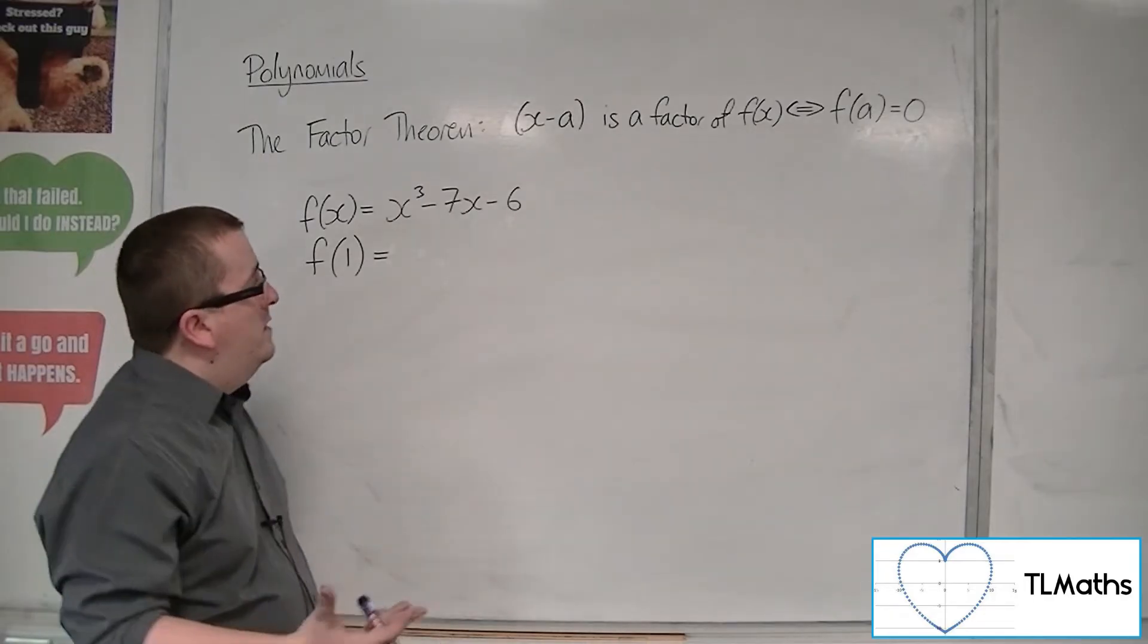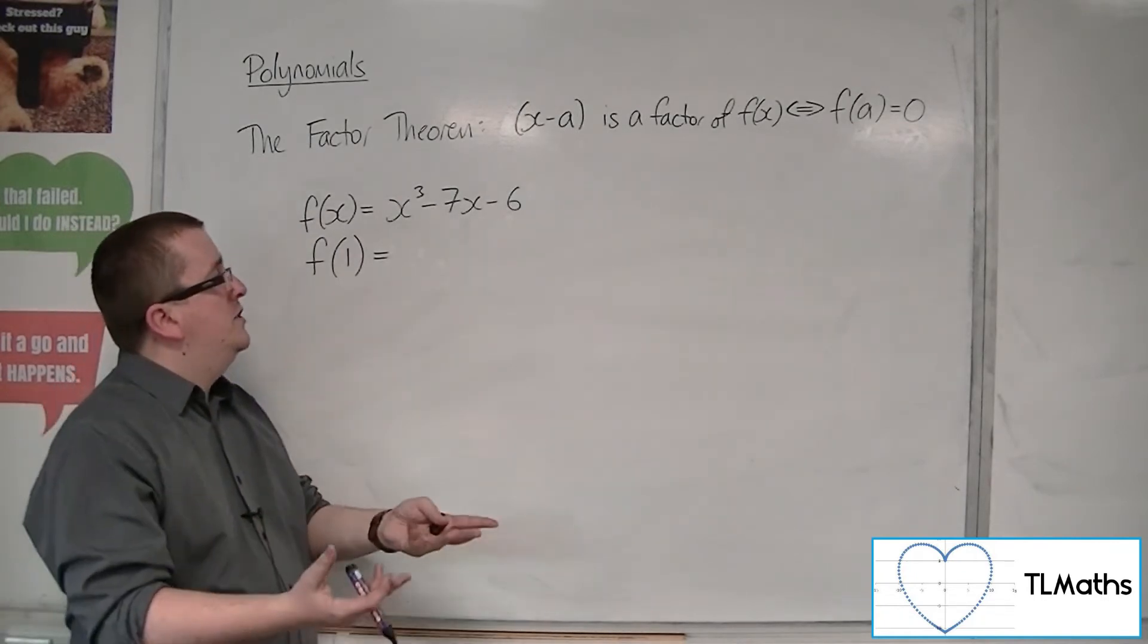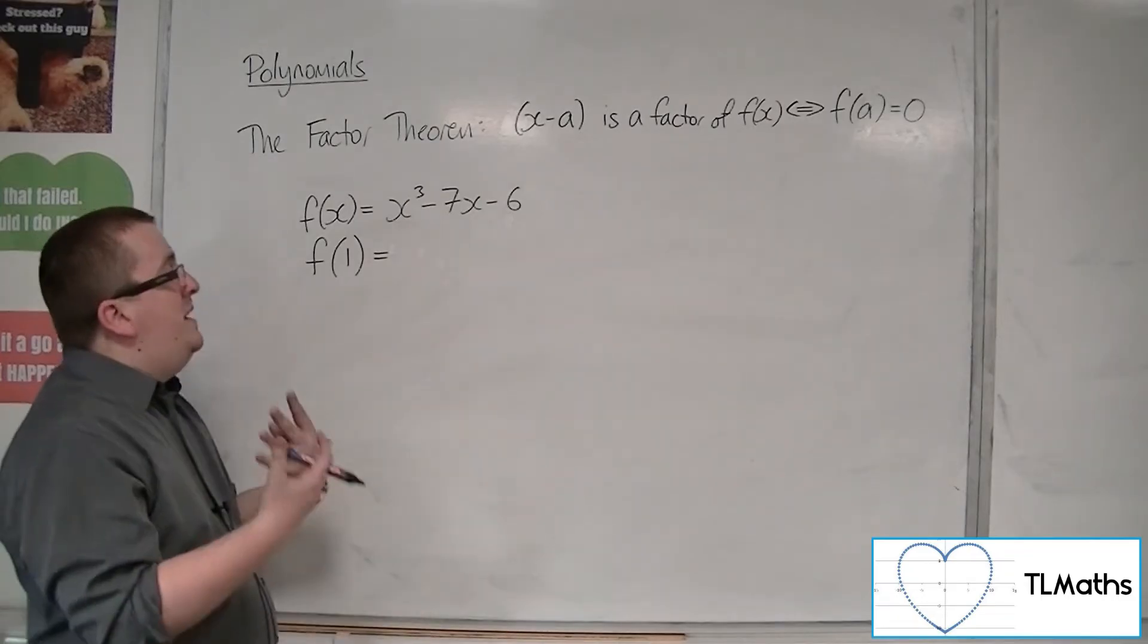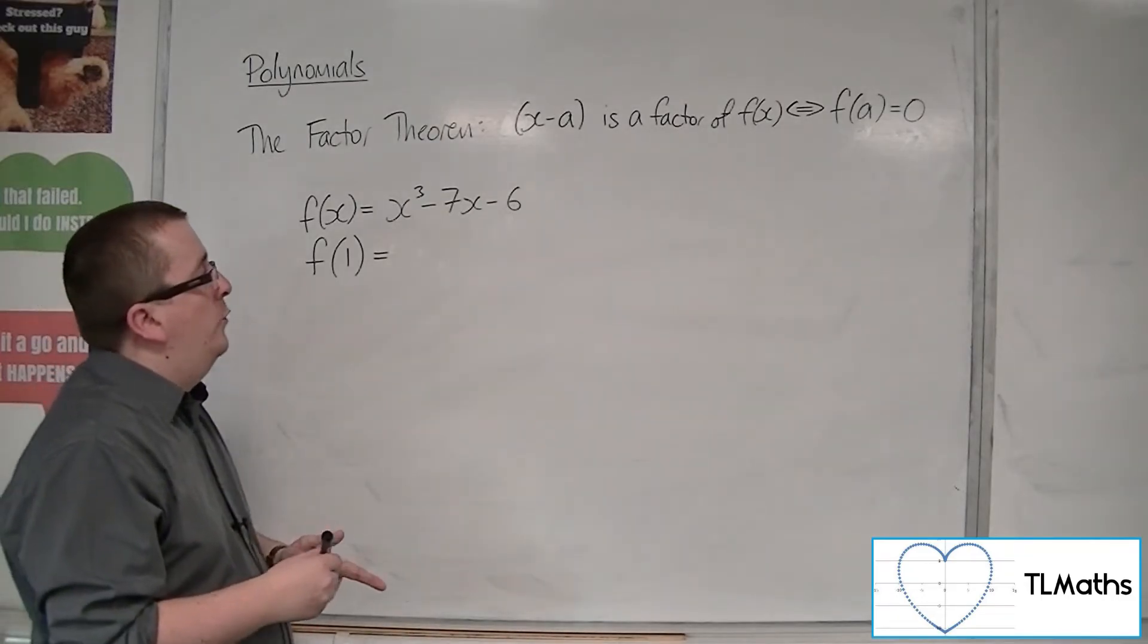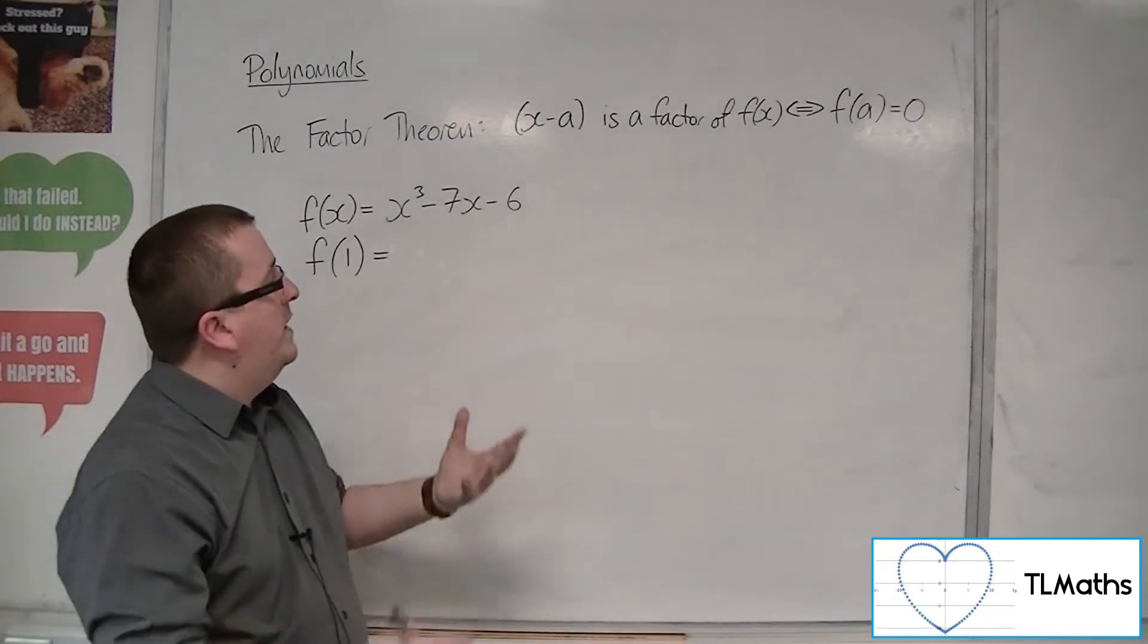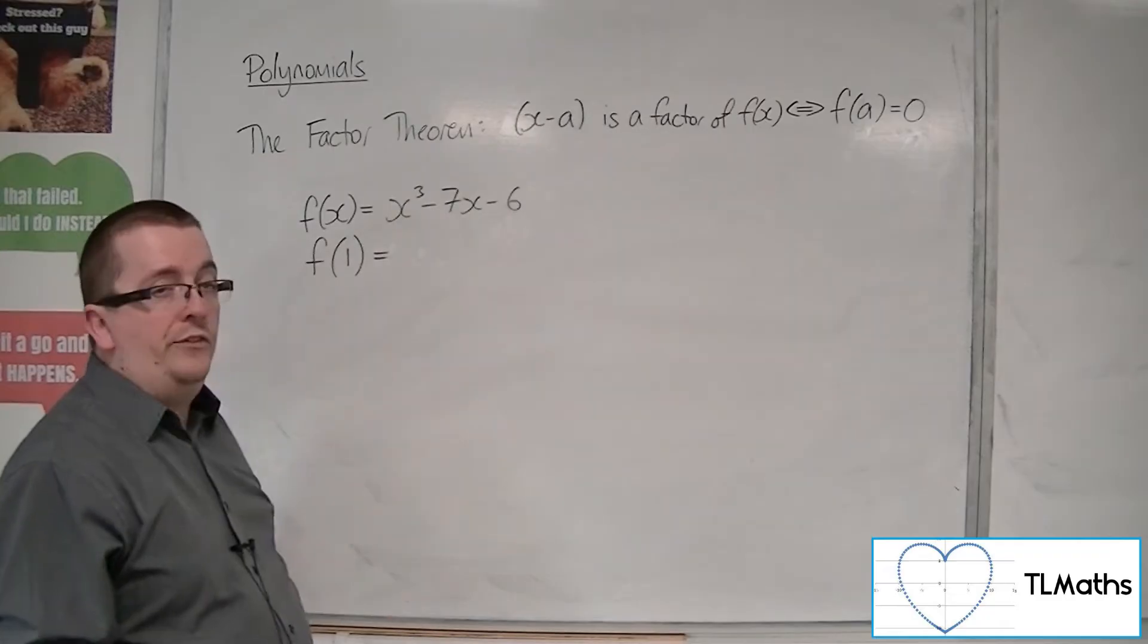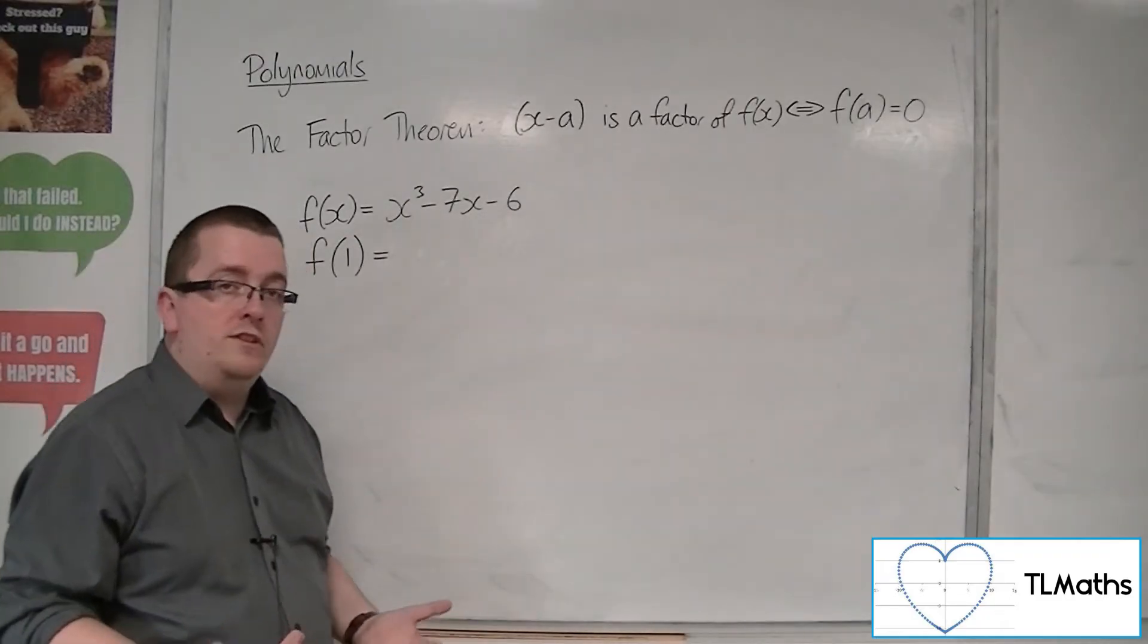So 1, minus 1, 2, minus 2, 3, minus 3, 6 or minus 6. There would be no point in trying 5 or 0 or 100 or whatever, because ultimately those numbers need to multiply together to make that minus 6, if I've got it in factorised form.